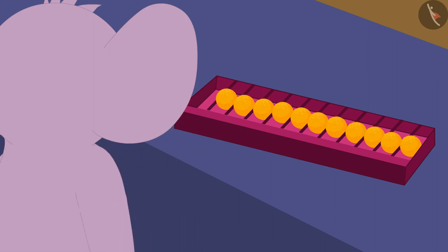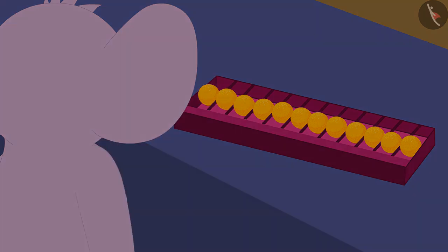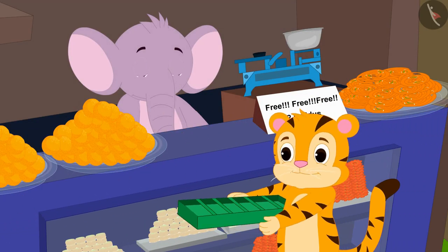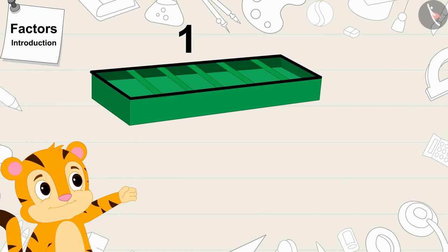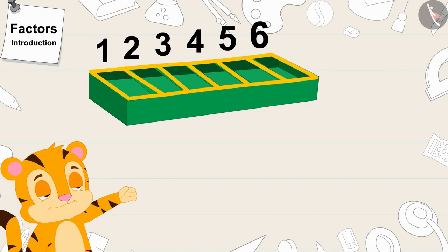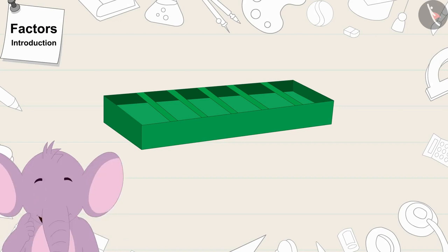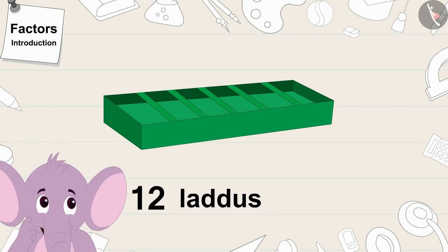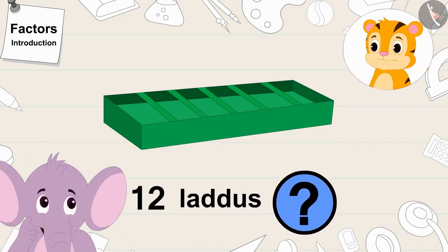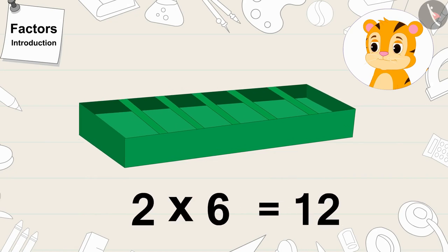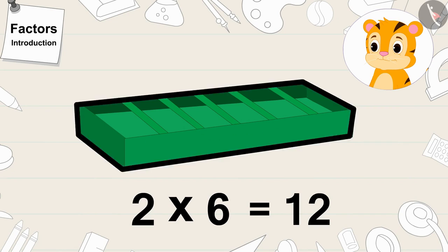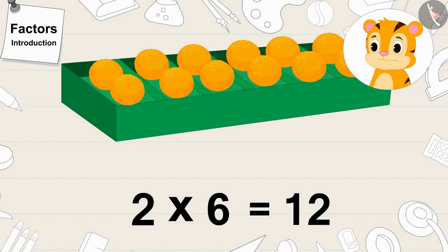Appu filled laddus in Babban's box. Next, Shere Khan gave his box to Appu. There is one vertical line in Shere Khan's box and 6 slots. Children, will Appu be able to keep 12 laddus in Shere Khan's box? Yes — 2 times 6 is 12, so 12 laddus can be kept in Shere Khan's box.